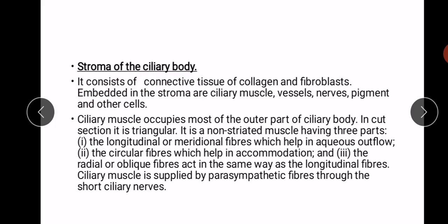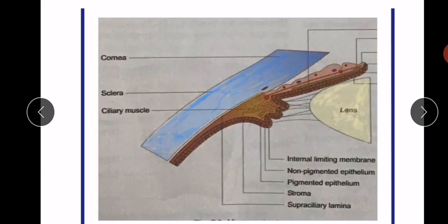The ciliary muscle occupies most of the outer part of the ciliary body. In cut section it is triangular. It is a non-striated muscle with three parts: longitudinal or meridional fibers, which help in aqueous outflow; circular fibers, which help in accommodation; and radial or oblique fibers, which act similarly to the longitudinal fibers. The ciliary muscle is supplied by parasympathetic fibers through the short ciliary nerves. In the diagram, you can see the cornea, sclera, ciliary body, and ciliary muscles.